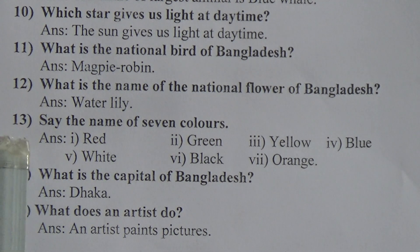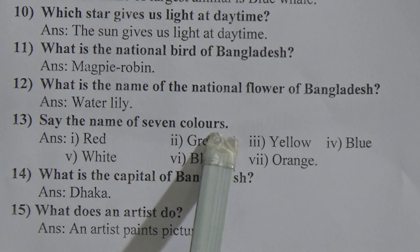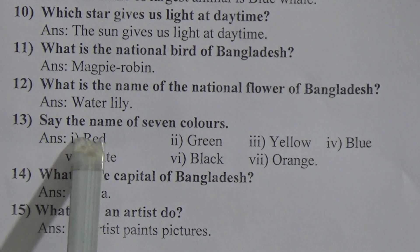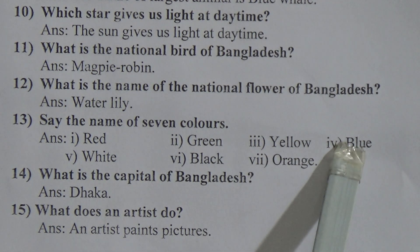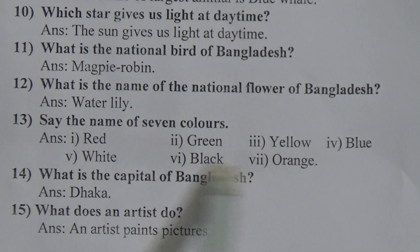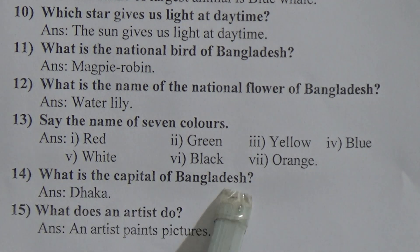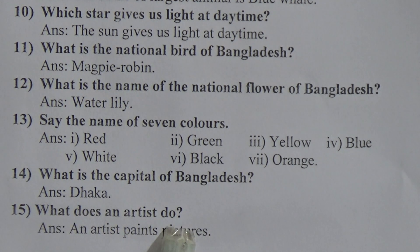Thirteen number: say the name of seven colors. You can write here — red, green, yellow, blue, white, black and orange. And fourteen number: what is the capital of Bangladesh? Capital of Bangladesh is Dhaka. Fifteen number: what does an artist do? An artist paints pictures.